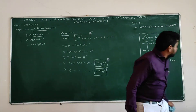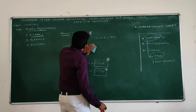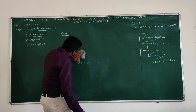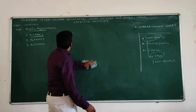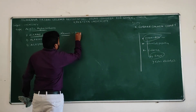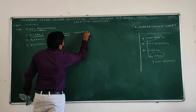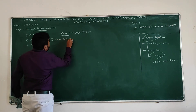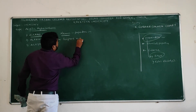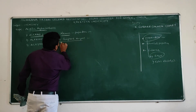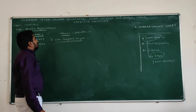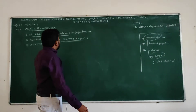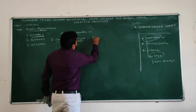In this preparation of alkanes, the first method is preparation of alkanes from Grignard reagent. Grignard is a scientist's name — in honor of that scientist we call it Grignard reagent, and he also won the Nobel Prize. The formula of Grignard reagent is RMGX.